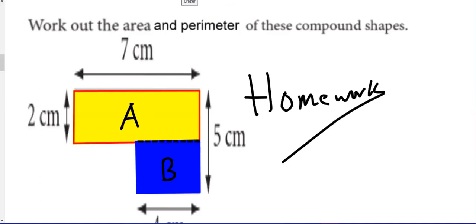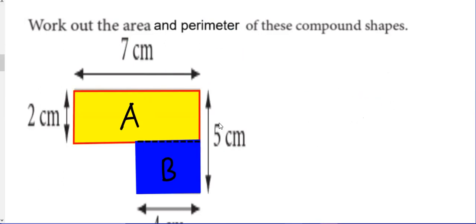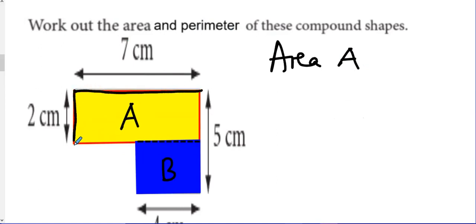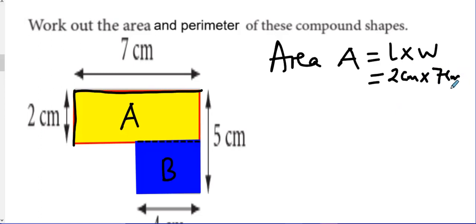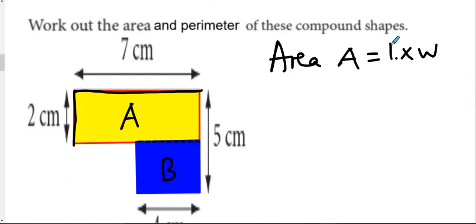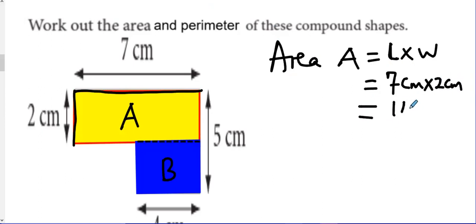To find the area of this compound shape, I'm going to find area A first. Area A: the length is 7 and the width is 2. Area A equals length times width — it's purely a rectangle — so 2 centimeters times 7 centimeters equals 14 centimeters squared. That is area A.